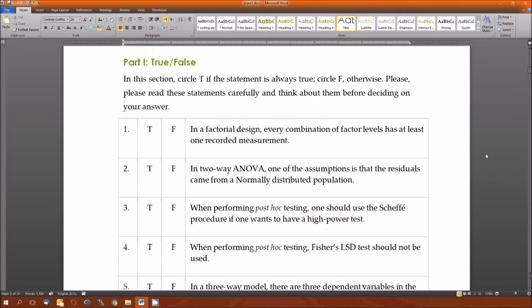In a factorial design, every combination of factor levels has at least one recorded measurement. That's true. That is the definition of a factorial design. Two, in a two-way ANOVA, one of the assumptions is that the residuals come from a normally distributed population. Yes, that is also true. The other assumption is that the populations in each of the groups, or the subpopulations, have the same variance.